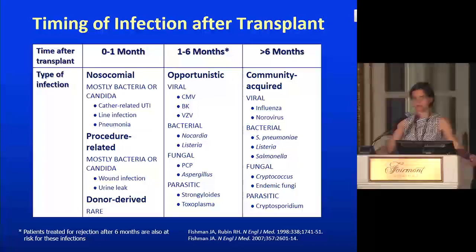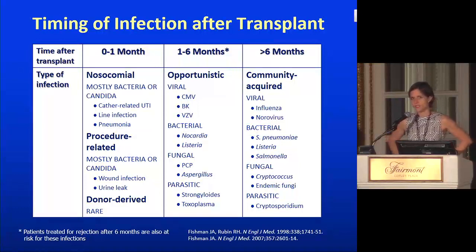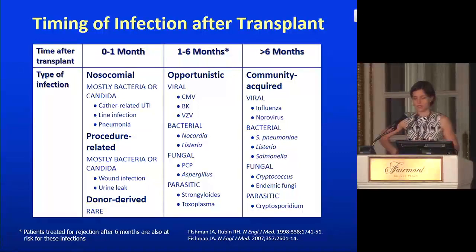Occasionally in this first period, we'll see a donor-derived infection — these present weirdly and sometimes involve strange things like microsporidium. Once you're one to six months out from transplant, the immunosuppression has really set in, and that's when you see opportunistic infections. In the absence of prophylaxis, this is when you see CMV reactivation, BK virus, VZV, nocardia, listeria, and PCP. If you're more than six months out but were just given pulsed steroids or rituximab for antibody-mediated rejection, you'd pop back into that middle box and need to think about opportunists.